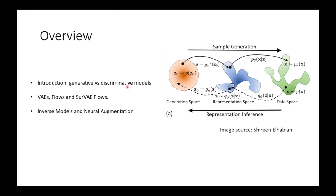And finally, I'll talk a little bit about my philosophy on how we should combine inverse modeling with generative modeling, in a scheme which I call neural augmentation — a hybrid scheme where both generative modeling as well as discriminative modeling work together.